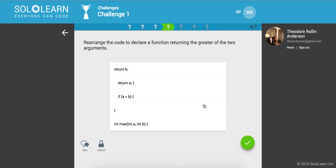Next up, rearrange the code to declare a function returning the greater of two arguments. So here we have int max, that's our function declaration. And we're going to say, if a is greater than b, then return a. Otherwise, return b. Awesome.